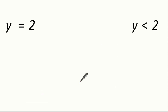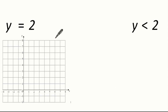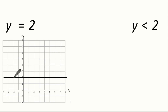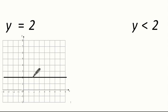Now let's have a look at y, starting with y equals 2. Here you can see wherever you go on the line, y is always 2. For example, when x is 2, y is 2; when x is 5, y is 2; when x is 7, y is 2.